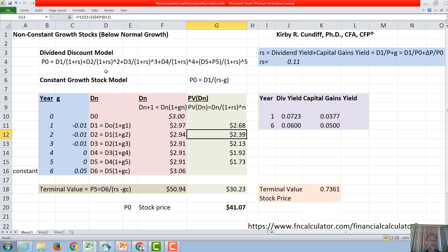The next value here is going to be 2.94 divided by 1.11 squared, or 2.39. The next value here is 2.91 divided by 1.11 cubed, or 2.13. And the next one is going to be 2.91 divided by 1.11 to the fourth, or 1.92, followed by D5 here, 2.91 divided by 1.11 to the fifth, or 1.73.